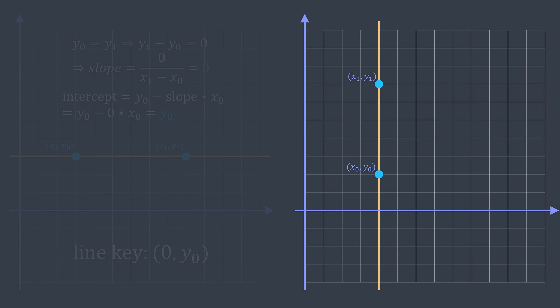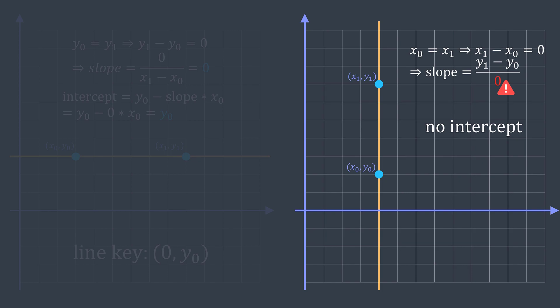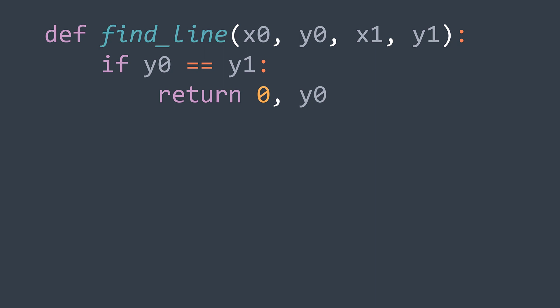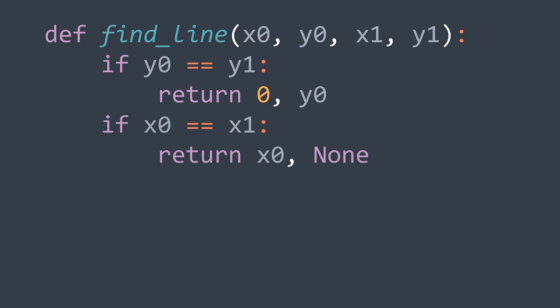The line is vertical when X0 equals X1. In that case, the slope is undefined because we're dividing by 0, and the intercept doesn't exist because it never crosses the Y axis. The only thing that makes it different from other vertical lines is the X value. So we take X0 (or X1, they're equal). We can also add null as a second characteristic to keep the same return type.